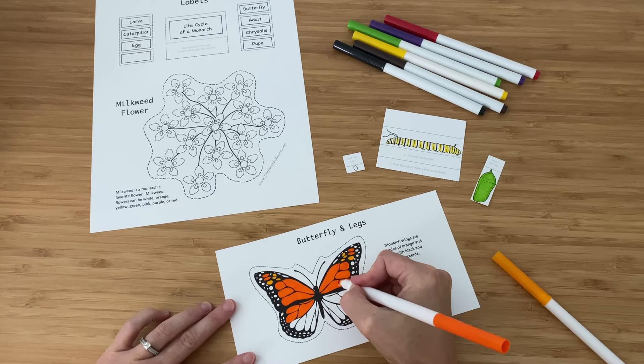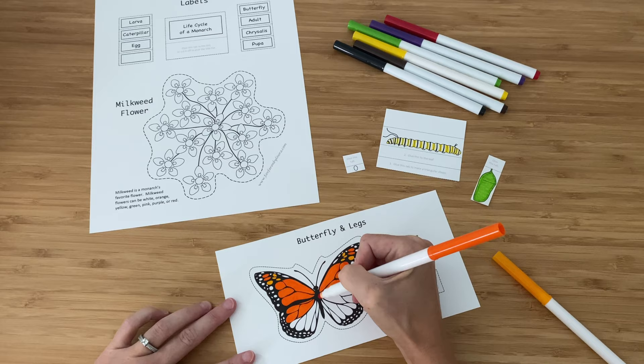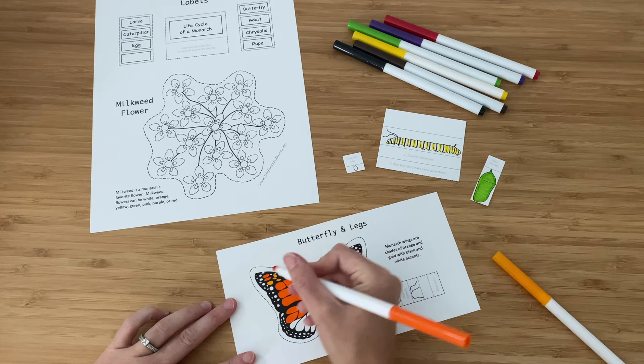An important thing to know about the wings of a butterfly is that they are symmetrical. That means that if I drew a line right down the middle of the butterfly, each side would look exactly the same. So where I colored these gold parts, I did it in the same spot on both sides.